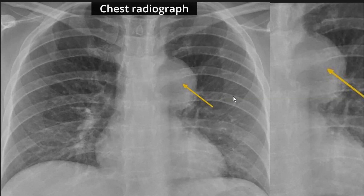The mass is located in the mediastinum because it has an obtuse angle. Now, where in the mediastinum is it — anterior, posterior, or middle mediastinum? Let us look at some of the signs.